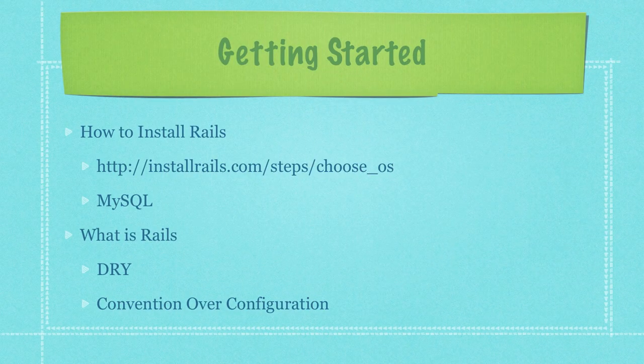Rails uses two main concepts you need to grasp. It's a little bit hard to start writing Rails applications but after you get over the initial hump it gets very easy. One thing you need to know is Rails follows two different premises. The first is 'Don't Repeat Yourself.' This means we need to avoid duplicating our code, which is going to make our web application much easier to maintain.